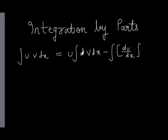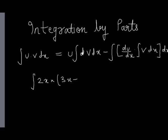Let's look at one example using the basic integration by parts formula. The function I want you to integrate is 2x multiplied by (3x − 2) raised to the power 6.